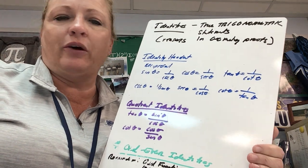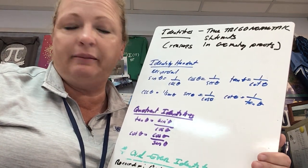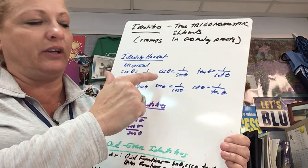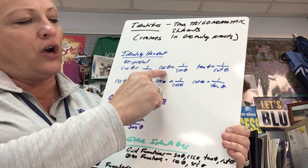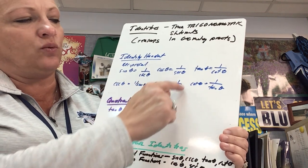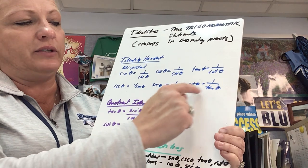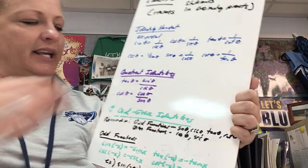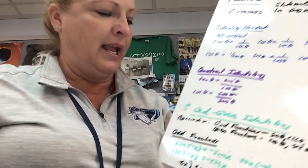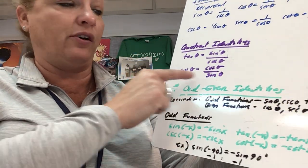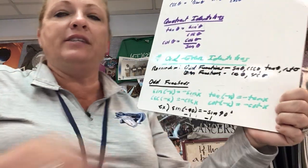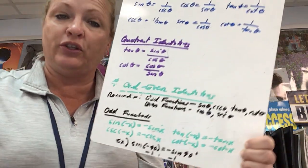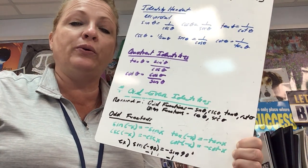They are grouped by categories. Reciprocal identities: we already know the relationship that sine of theta is one over cosecant, cosecant is one over sine, cosine is one over secant, secant is one over cosine, tangent is one over cotangent, and cotangent is one over tangent. Quotient identities: tangent of theta is sine over cosine, and cotangent is cosine over sine. These are on the note handout; I would encourage you to add them to your identity sheet.